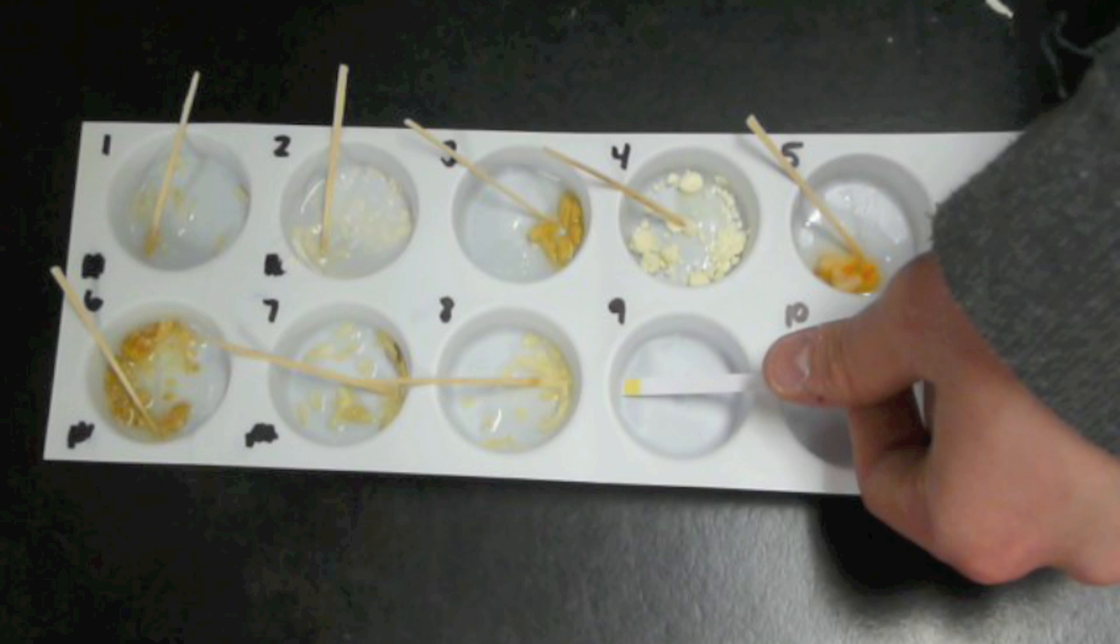We add this test strip as a control. We can look back at the end of the experiment and compare the yellow box on this test strip to all of the yellow boxes of each test result.